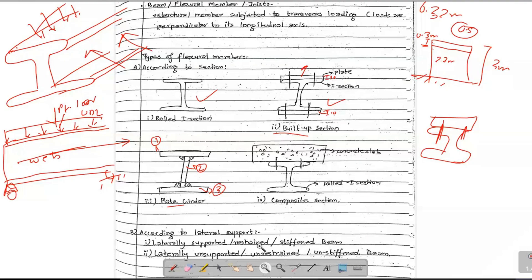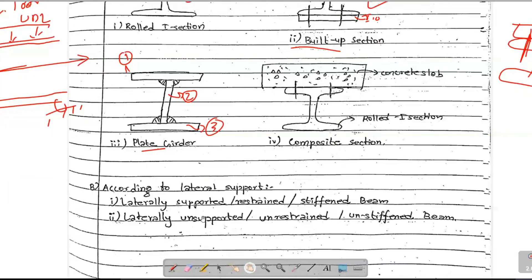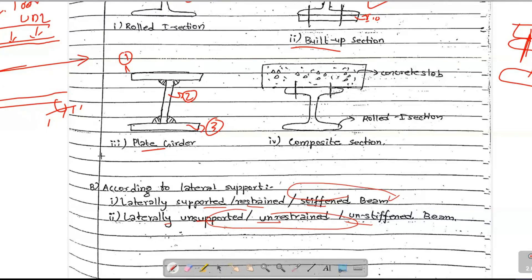Next, according to lateral support, the condition of lateral support is defined by the beam. This is very important. Laterally supported, or laterally restrained, or laterally stiffened beam — this is type 1. Laterally unsupported, or laterally unrestrained, or laterally unstiffened — these are all three types. This is important; this is how it is designed.